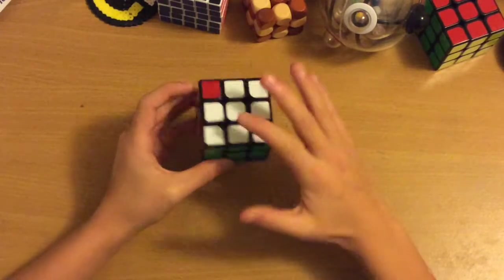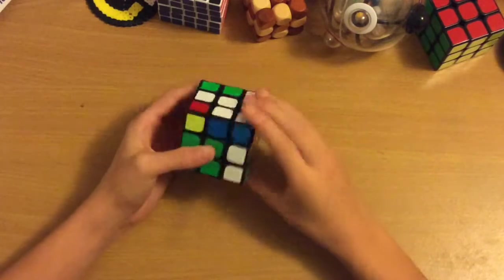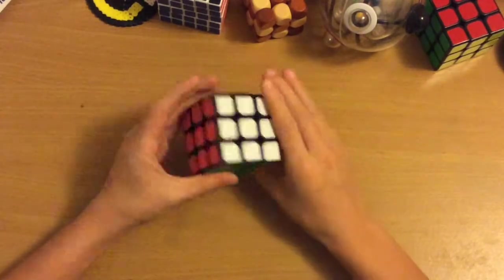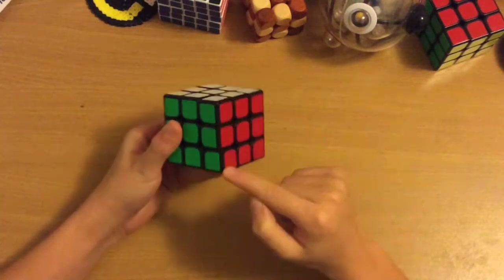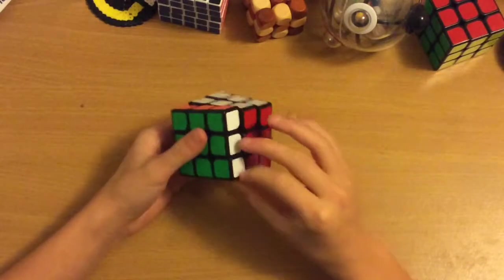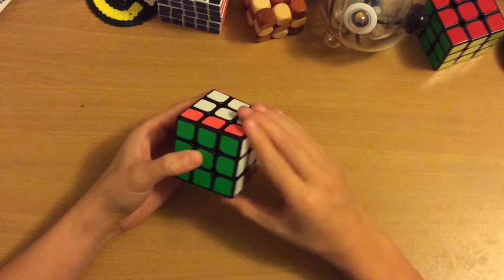But to get that, to actually switch it, what you're doing is you're doing a setup move. I'll quickly solve this real quick. So what you're doing to switch this with here, you have to get this piece to the P position. So like that. And then you do the algorithm I just showed you.